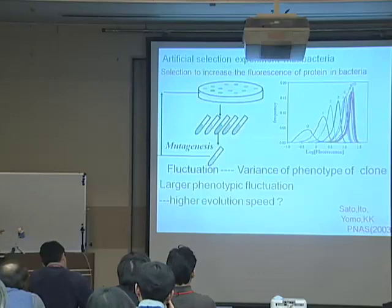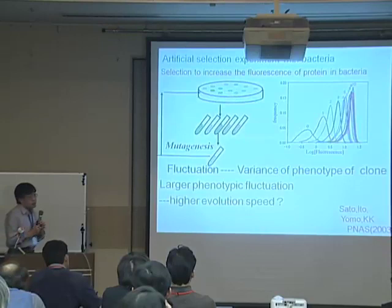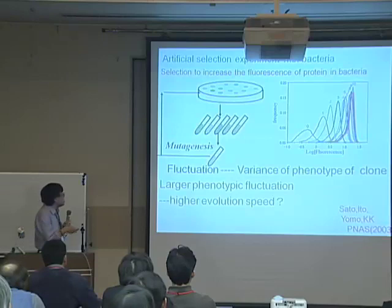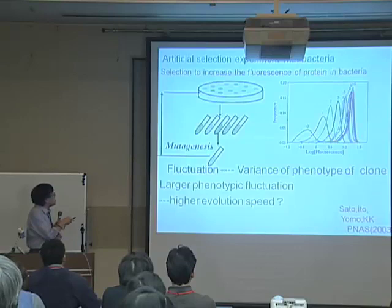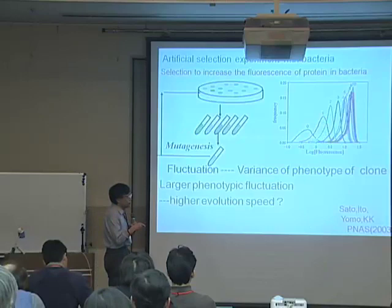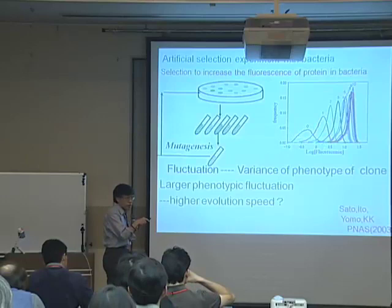The first experiment we did — this is the beginning of this type of study, about six years ago — is a selection experiment with bacteria. In this bacteria, there is a fluorescent protein. Initially the fluorescence was not very high. What we did was introduce mutations to this bacteria. Some bacteria had higher fluorescence and some had lower, and we selected for higher fluorescence. But as I said, even for the same-gene bacteria, there is large fluctuation. We made some mutants, and the highest one still showed large fluctuation.